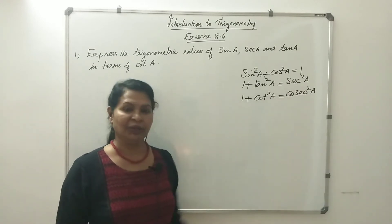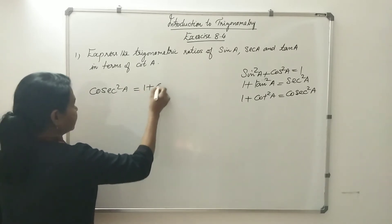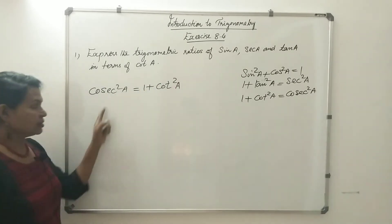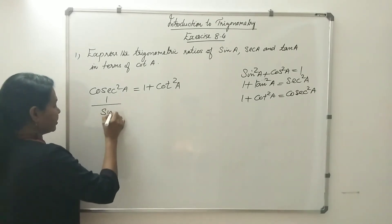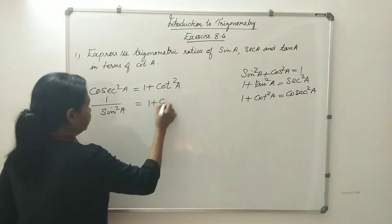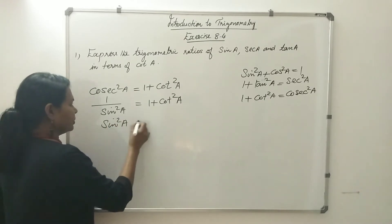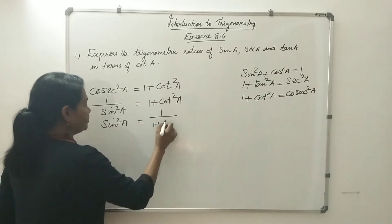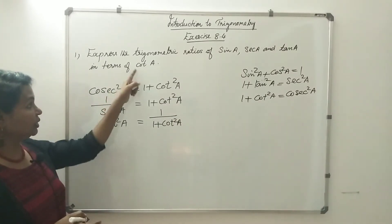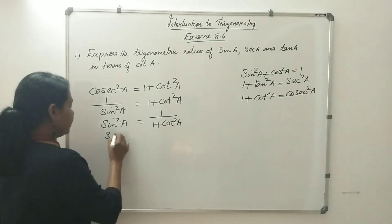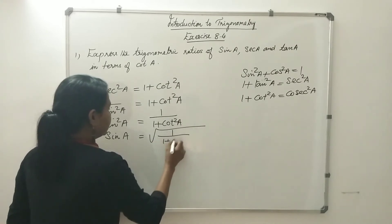We use the identity: cosec²A equals 1 plus cot²A. What is cosec²A? It is the reciprocal of sin, so 1 divided by sin²A equals 1 plus cot²A. Therefore sin²A equals 1 divided by (1 plus cot²A). So sinA equals the square root of 1 divided by (1 plus cot²A).